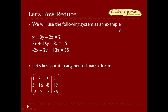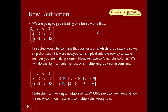Here we'll use a following example and first put it in augmented matrix form. We're going to get a leading 1 for row 1 first — in this corner right here. The first step is to make it a 1, which it already is, so we skip this step. If it were not, you can simply divide the row by whatever number is there to make it a 1 — say if it was a 2, you divide the whole row by 2.